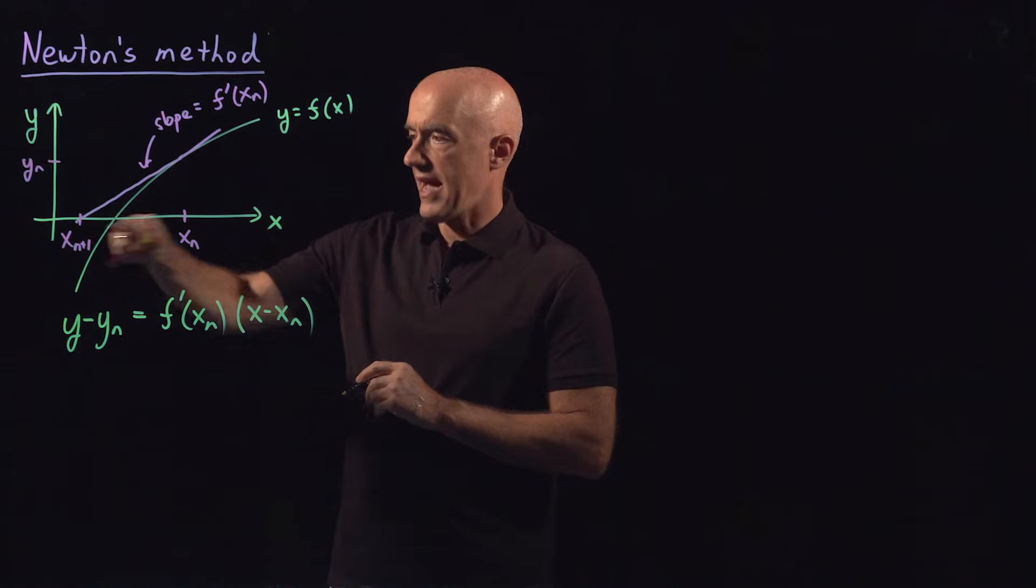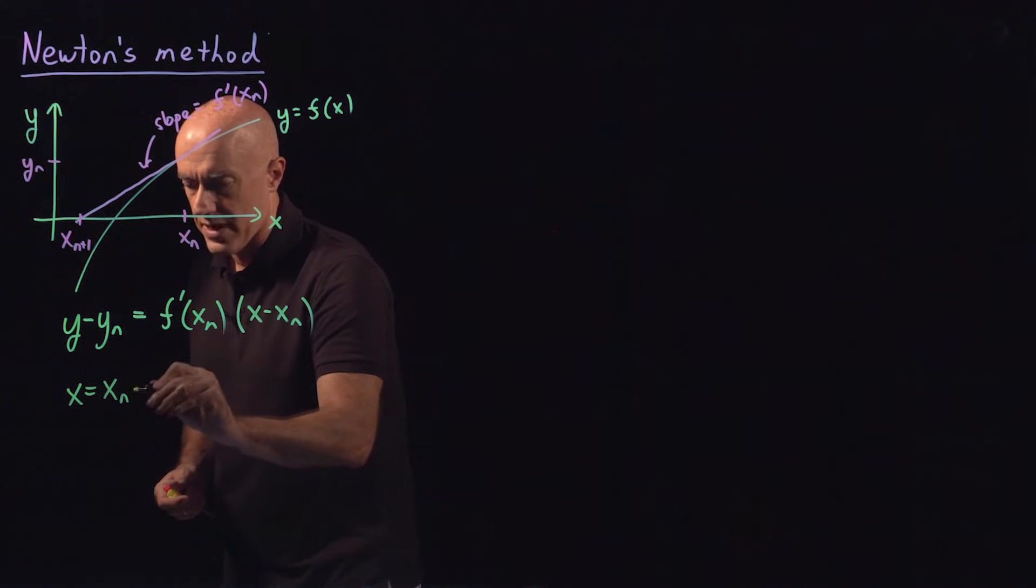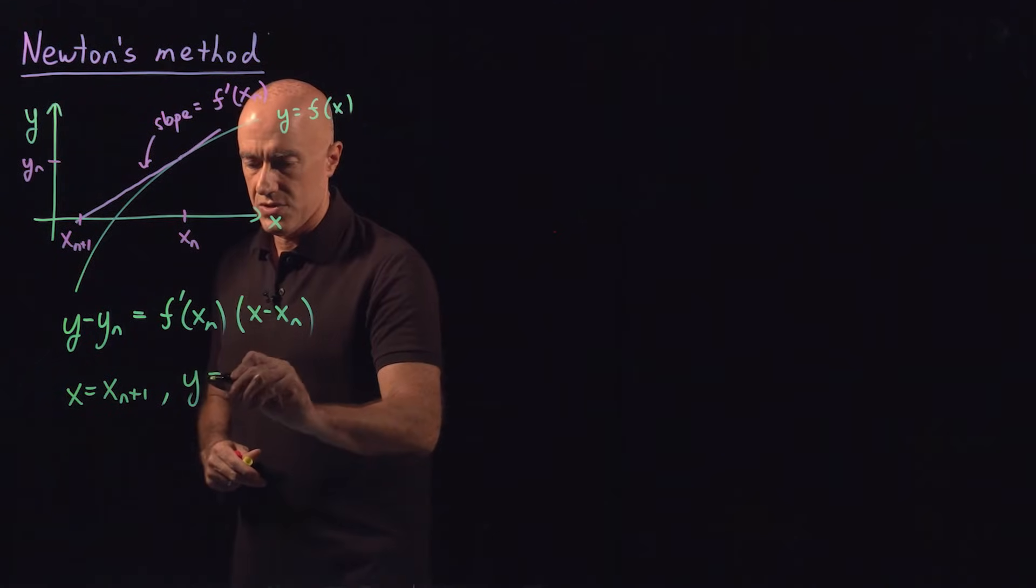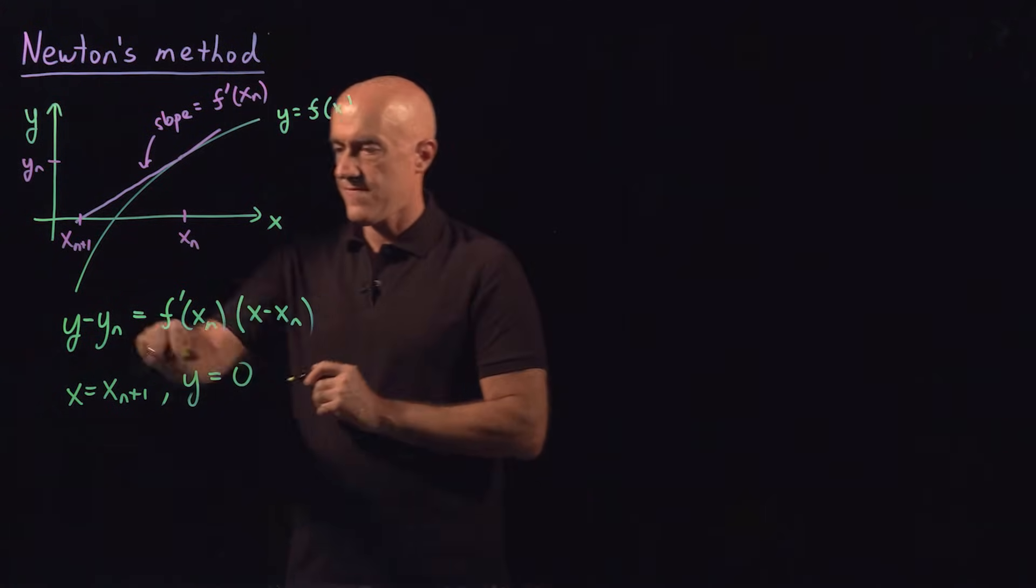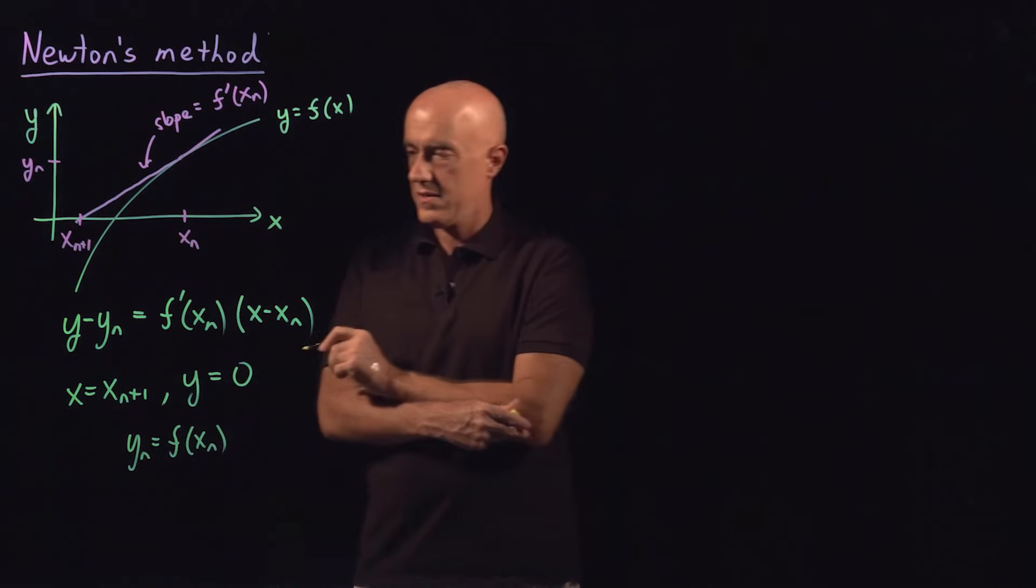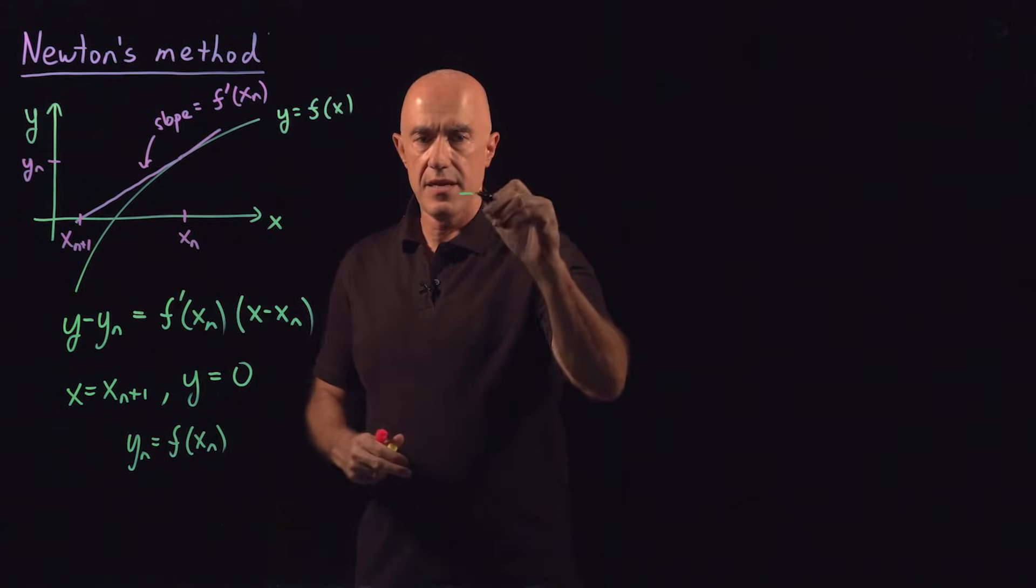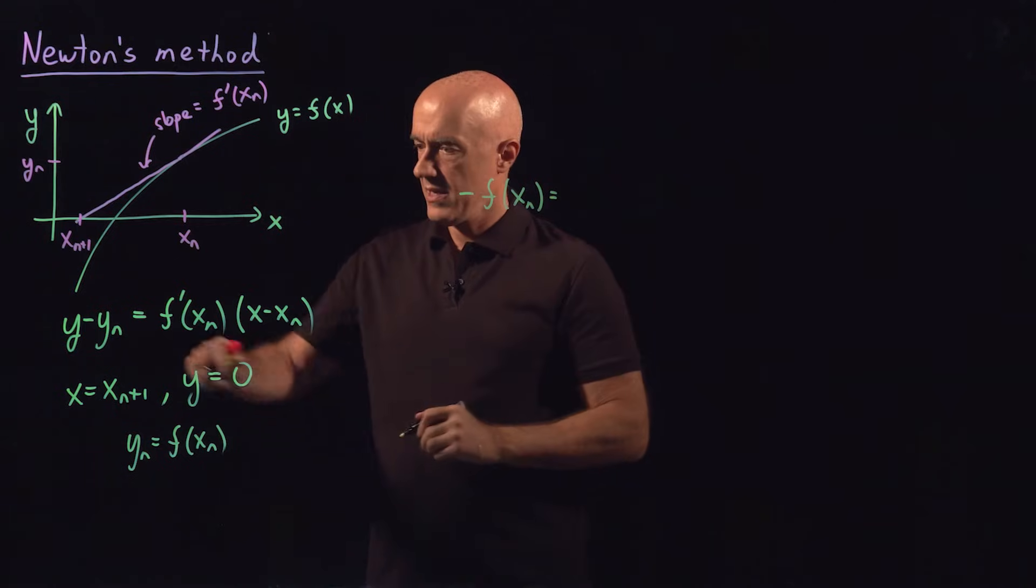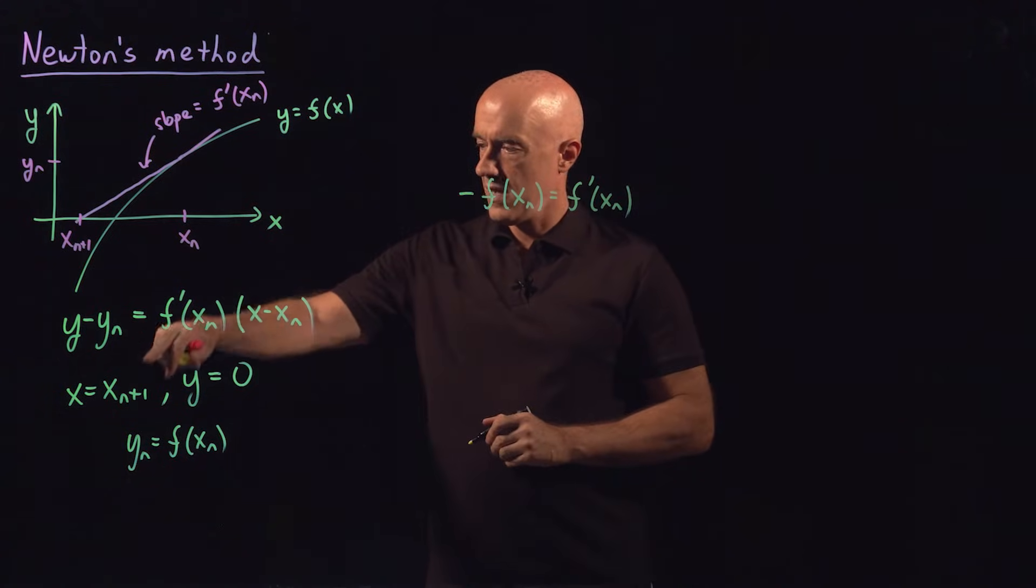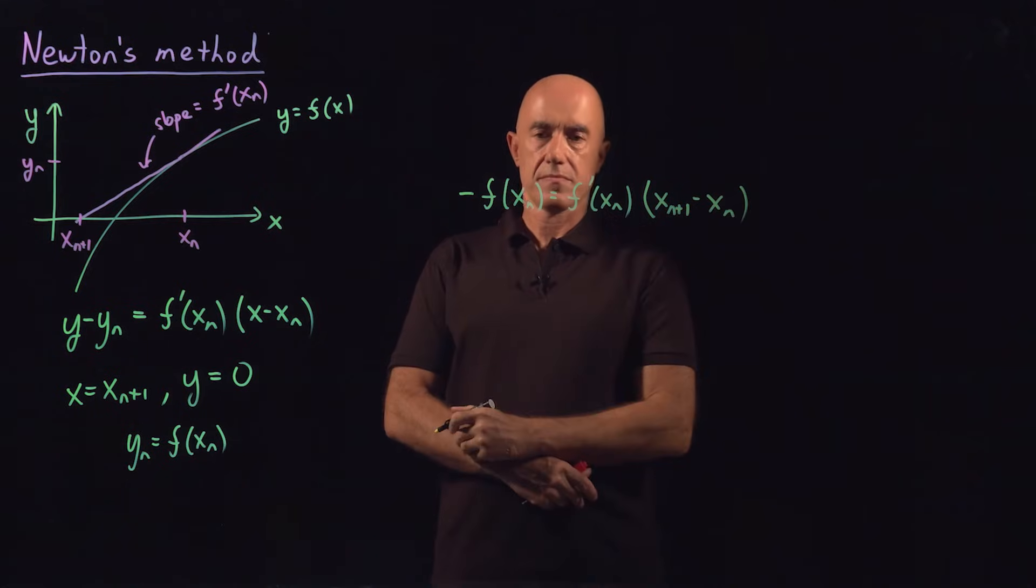And then we're trying to find x_{n+1}. So we want to find x equal to x_{n+1}. And then the value of y when x equals n plus 1 is equal to 0. And furthermore, we know y sub n equals f of x sub n. That gives us the equation y is 0. So 0 minus f of x_n is equal to f prime of x_n times x is x_{n+1} times x_{n+1} minus x_n.